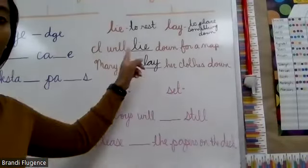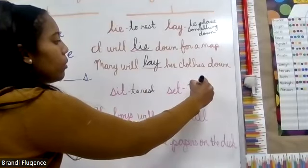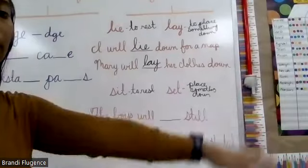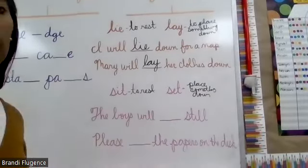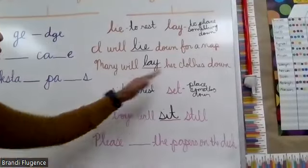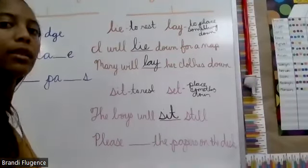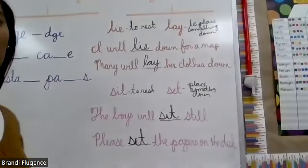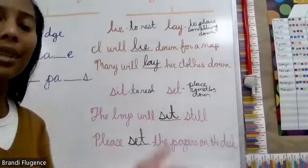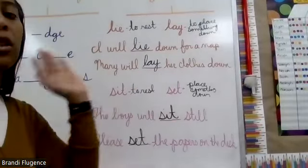Same thing with sit and set — they're very similar to lie and lay. Sit means to rest, and set means to place something down. 'The boys will sit still' — because they need to rest. 'Please set the papers on the desk' — set, because they're placing them down. So lie and sit mean to rest, and lay and set mean to place something down. You'll practice this inside your book as well.